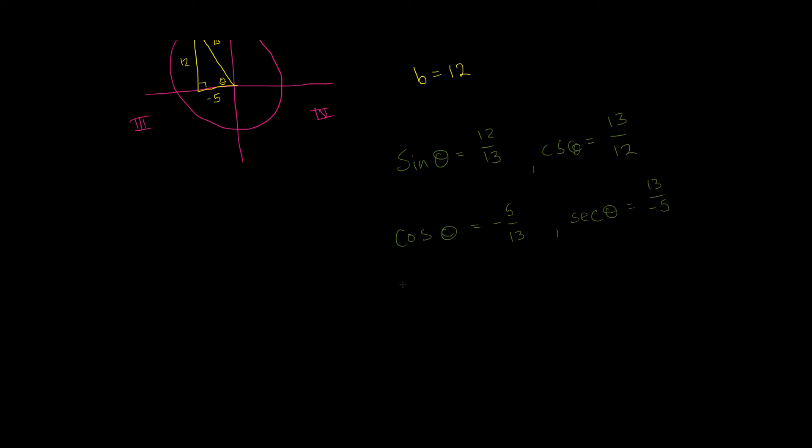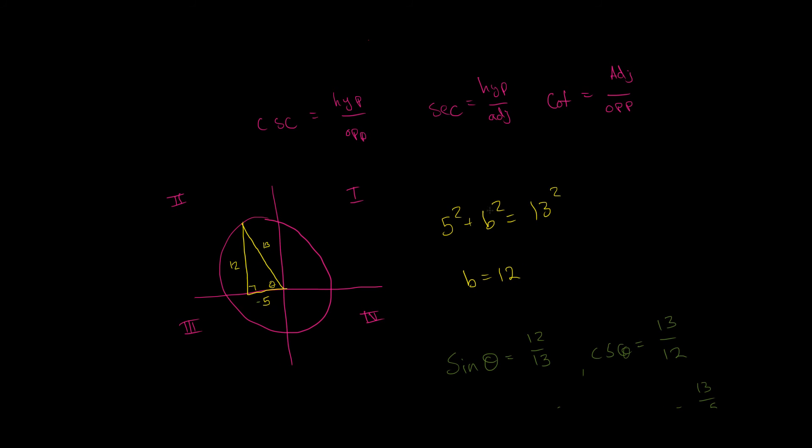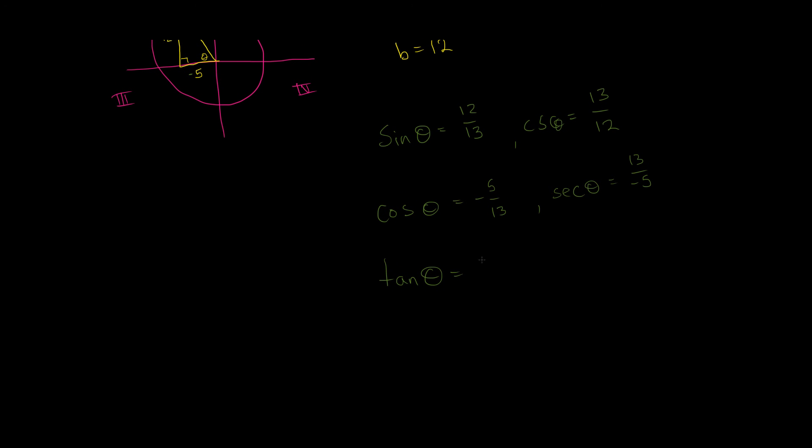Okay. And now, what about our tangent value? Our tangent theta is just our opposite over adjacent. So, opposite is 12. Adjacent is negative 5. So, we get 12 over negative 5. And that makes our cotangent theta equal to negative 5 over 12.